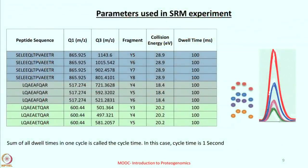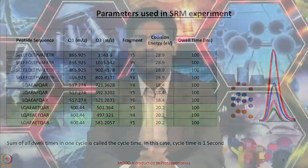The end result is a chromatogram formed by joining all the data points the instrument was able to collect over the retention time of the peak. With this we conclude the basic principle and the steps required to design a selected reaction monitoring experiment. In the next lecture we will look at data generated in the lab and use the popular software Skyline to analyze a data set. Thank you.